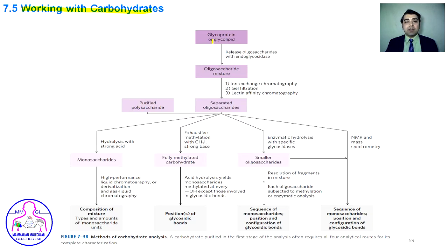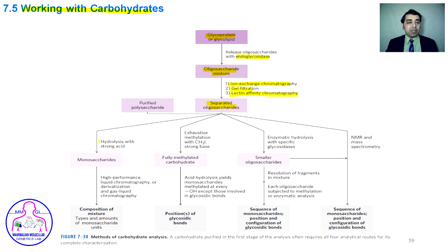When working with carbohydrates, glycoproteins or glycolipids are first treated with endoglycosidase, which releases all the carbohydrate portions. These are then separated by ion exchange chromatography, gel filtration, or lectin affinity chromatography. After separation, classes of oligosaccharides can be identified by hydrolysis using strong acids, which breaks all glycosidic bonds to convert them to monosaccharides separated by HPLC.